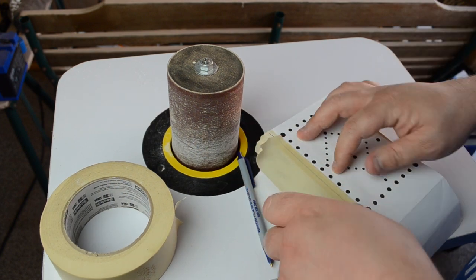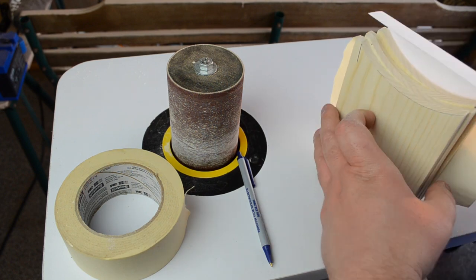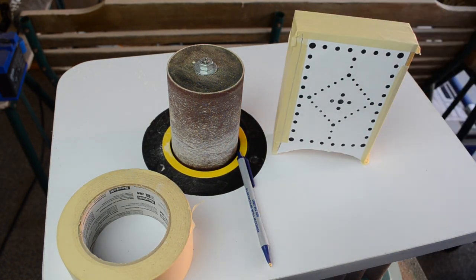You can then use either spray adhesive or in my case I just use masking tape to tape down the template. I also use the masking tape to make sure that the pieces are taped together.